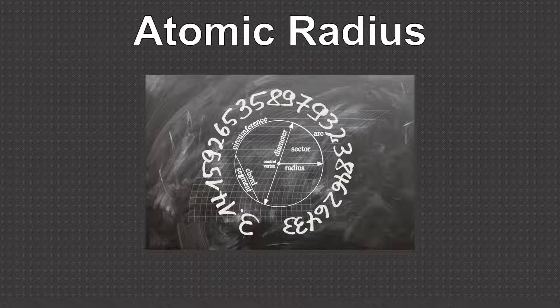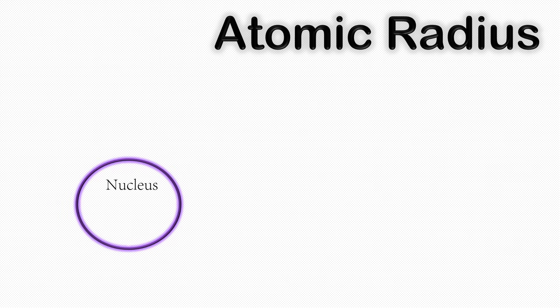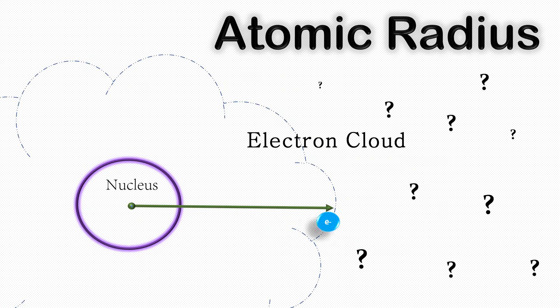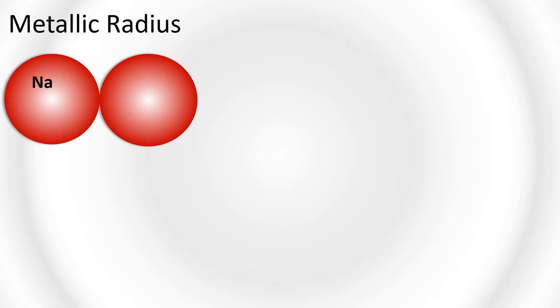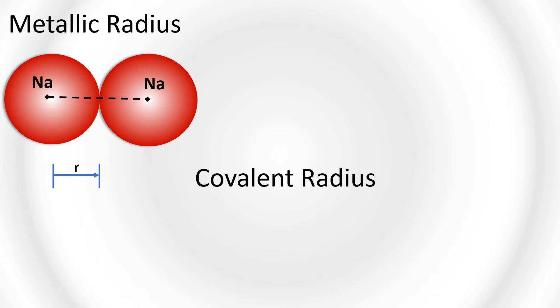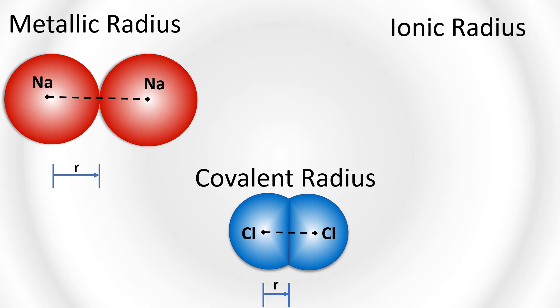Another important periodic trend is atomic radius. The atomic radius measures the size of an atom — specifically the distance from the center of the nucleus to the edge of the electron cloud. The problem is, this is a hard measurement to make because electrons are always moving and don't have an exact location. So scientists use different ways of measuring the radius of an atom, such as the metallic radius, the van der Waals radius, the covalent radius, and the ionic radius.